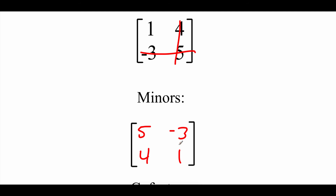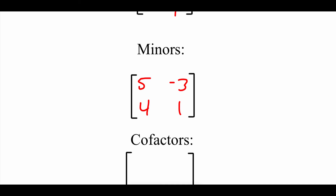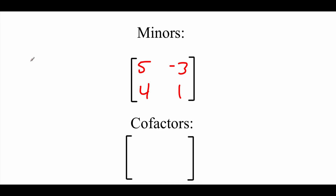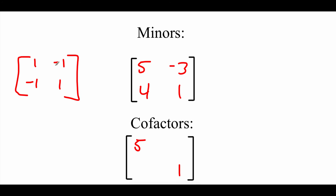So this is our minor matrix based on the original 2x2 matrix. For a 2x2 matrix, the cofactor sign chart looks like: positive 1, negative 1, negative 1, positive 1. Positive 1s mean we keep the sign the same — so looking at the 5 and the 1, those stay the same. On the other diagonal where the negative 1s are, we change the signs: negative 3 becomes positive 3, and positive 4 becomes negative 4.